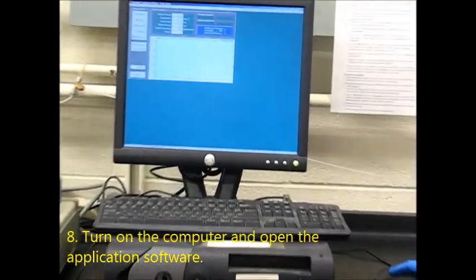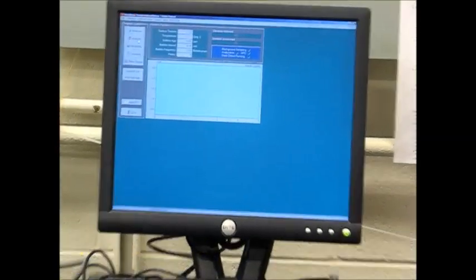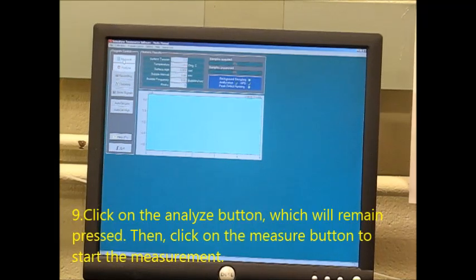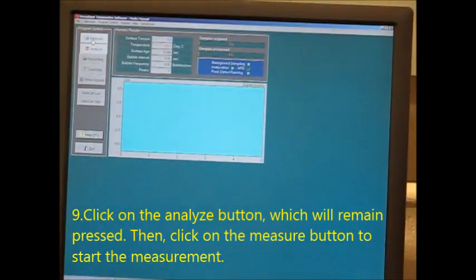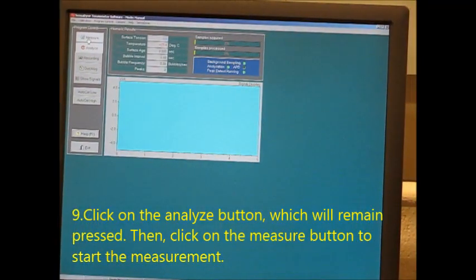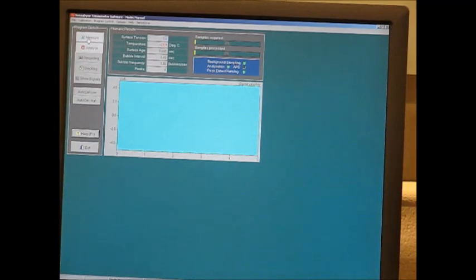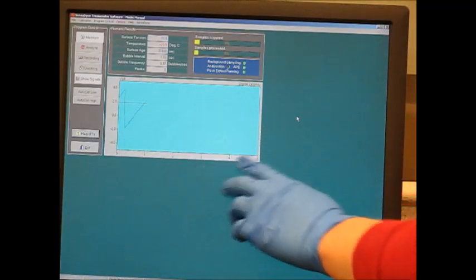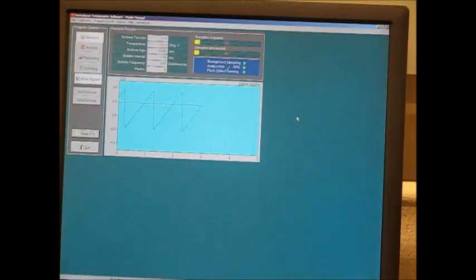From here we're going to press analyze and then press measure. You'll see it start acquiring samples. You can also press show signals and it will show you every time a bubble flows. What you're looking for is this zigzag pattern. That's how you know it's reading correctly.